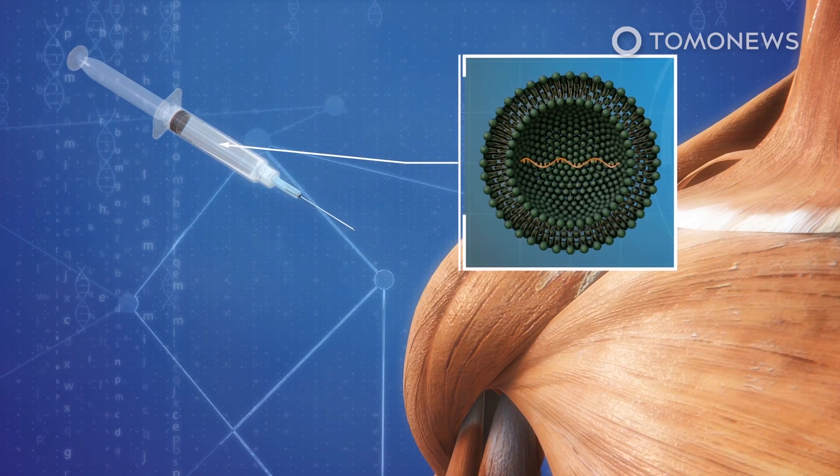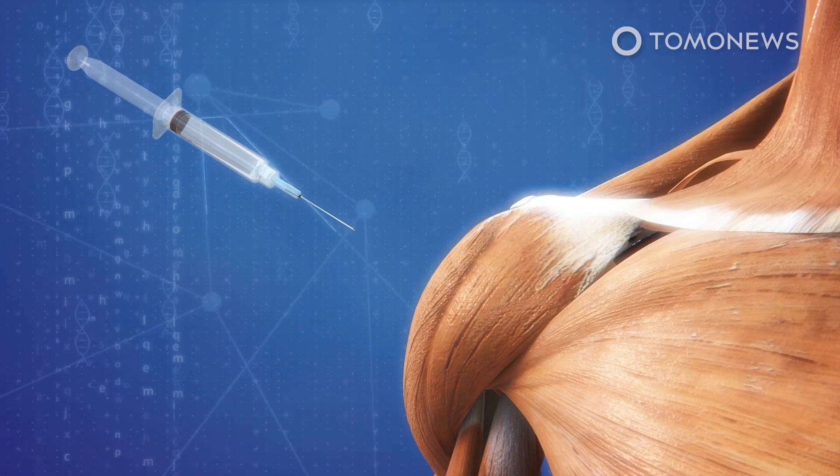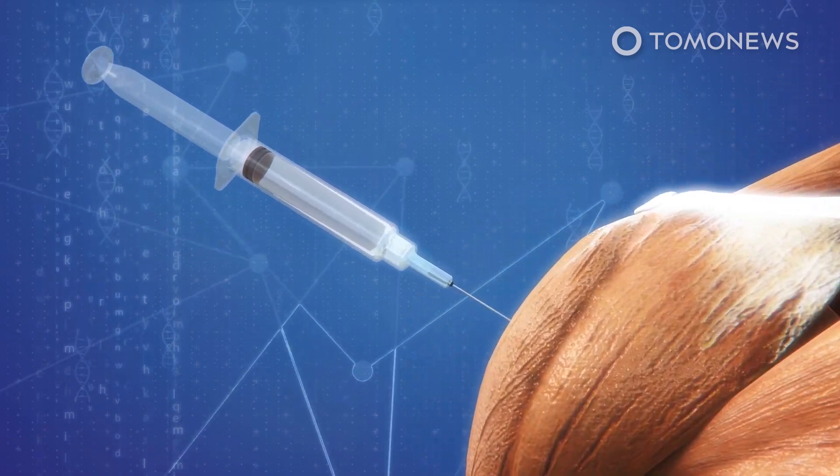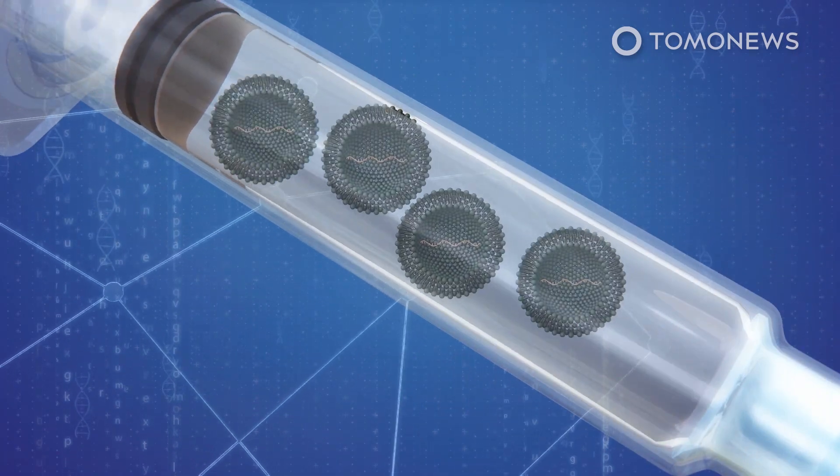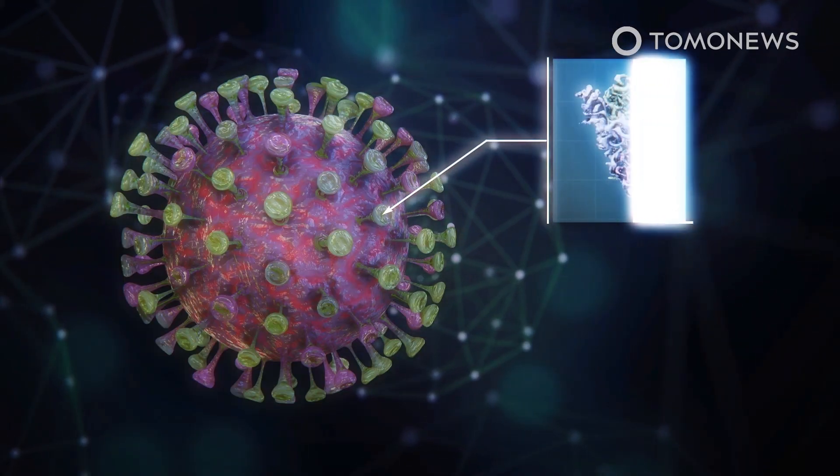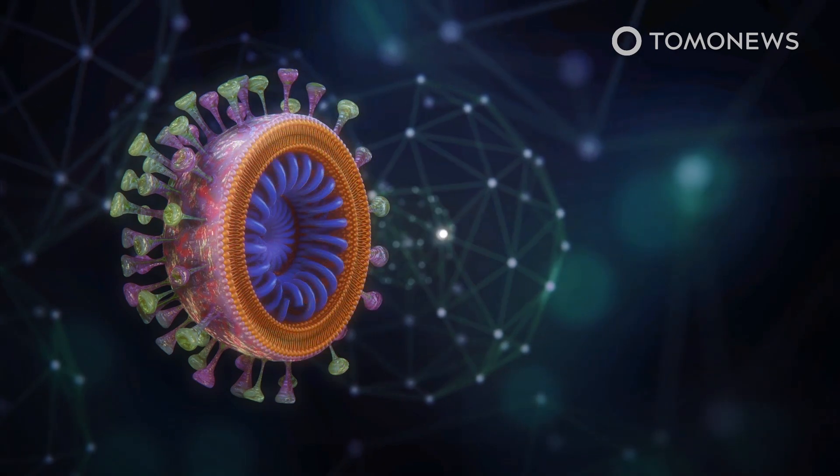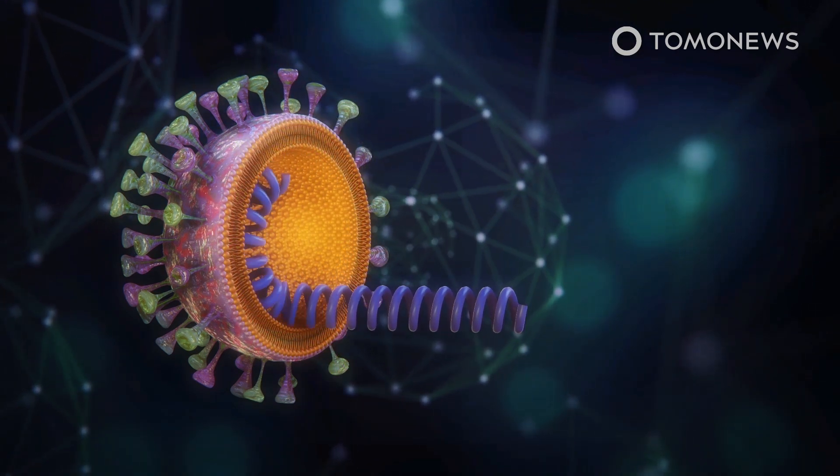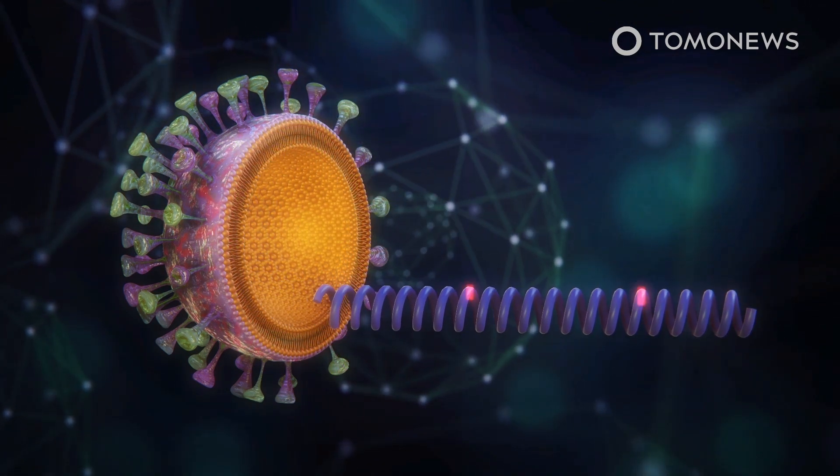An mRNA vaccine is based on the genetic sequence of the novel coronavirus and not the actual virus. mRNA is short for messenger RNA. Pfizer and BioNTech's SARS-CoV-2 vaccine uses the genetic blueprint for the spike protein that coats the virus, according to information published on Pfizer's website.